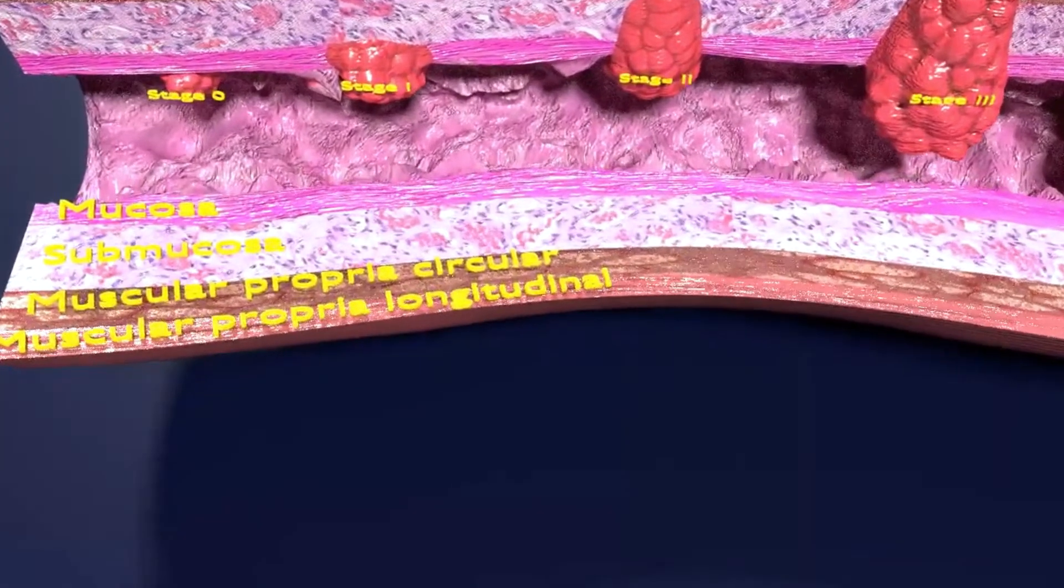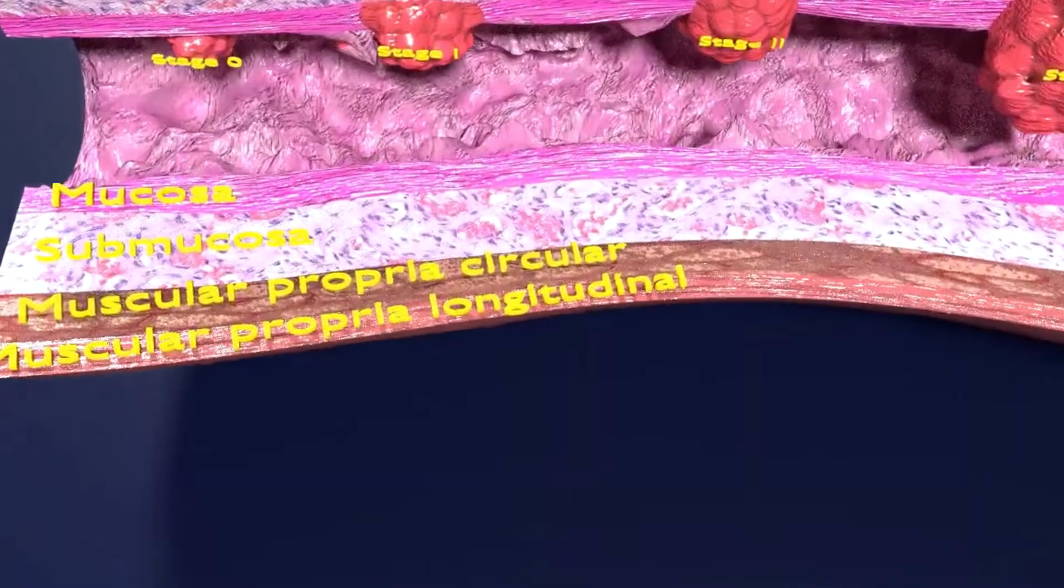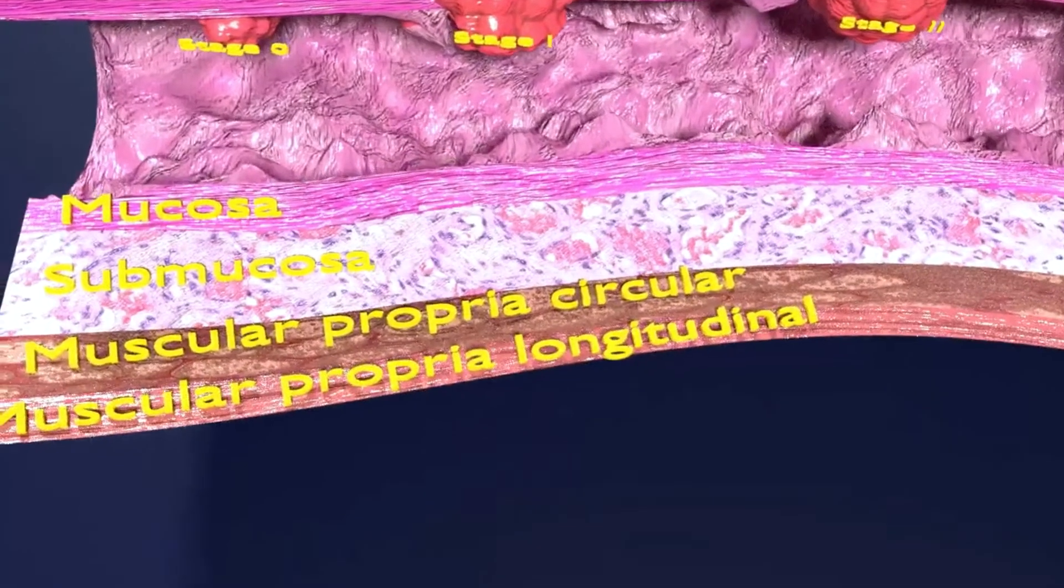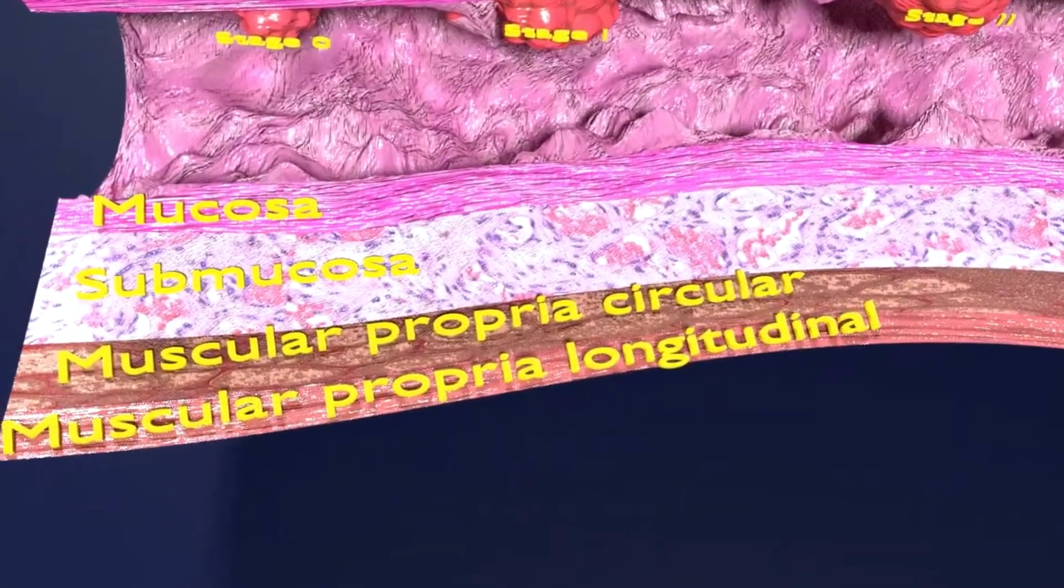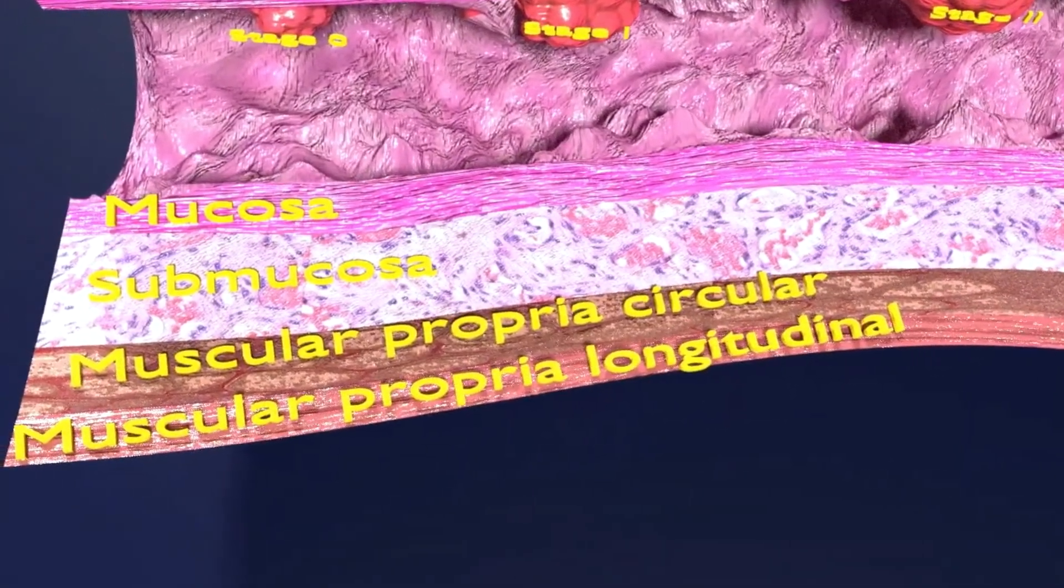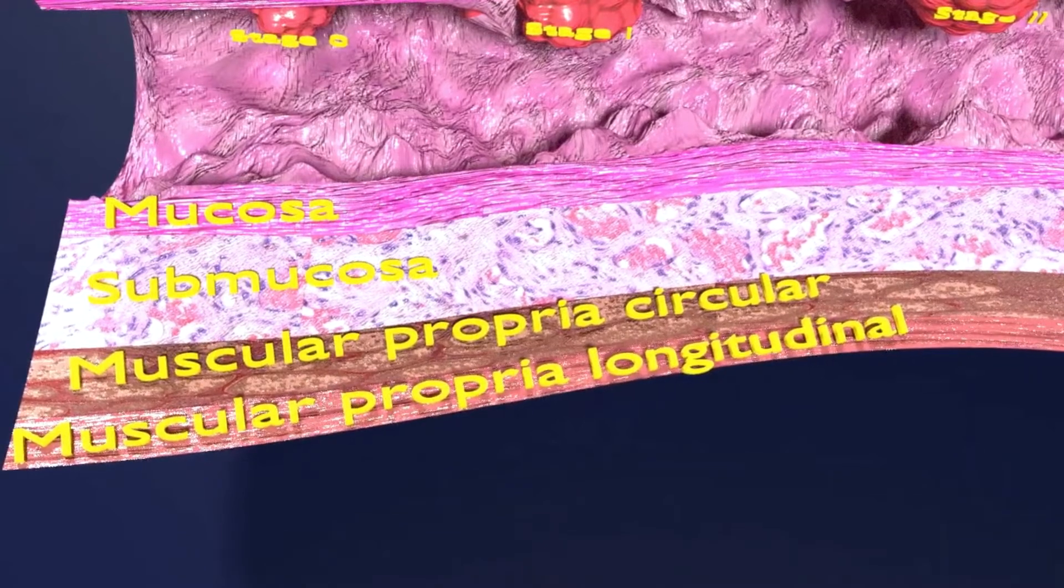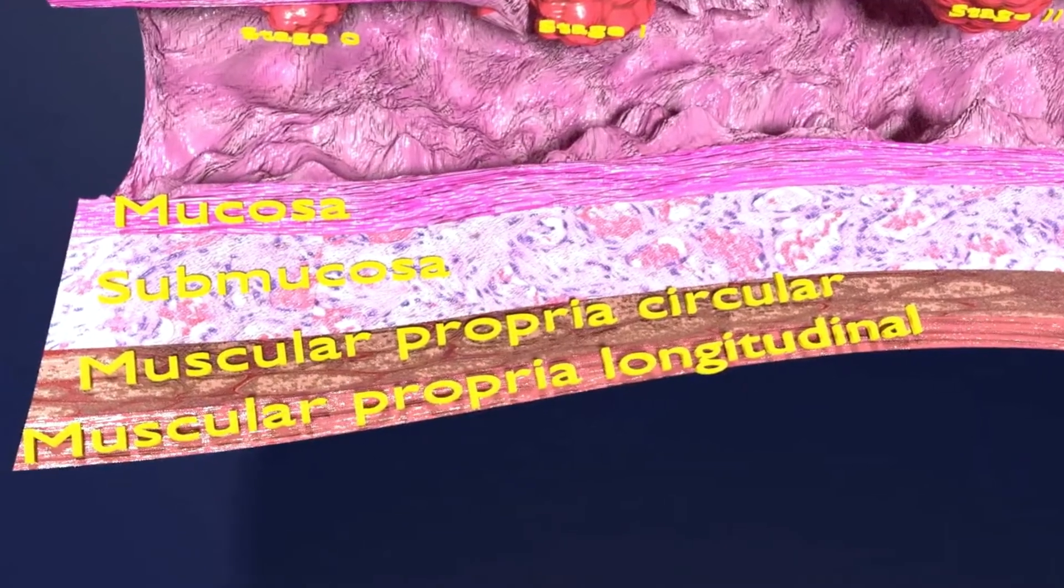Here you can see the cut section of colon with different layers of its wall: mucosa, submucosa, muscularis propria circular, muscularis propria longitudinal, from inside to outside respectively.